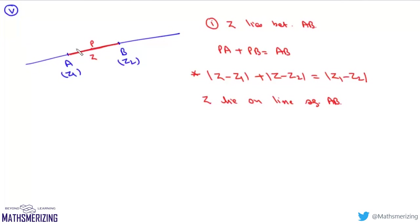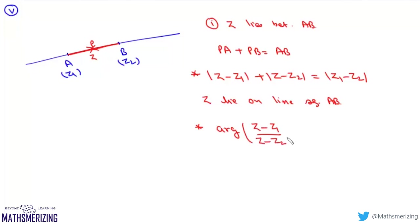Another way to express the same condition is using argument: arg((z - z₁) / (z - z₂)) = π also means that z lies on the line segment AB.